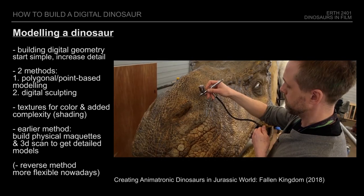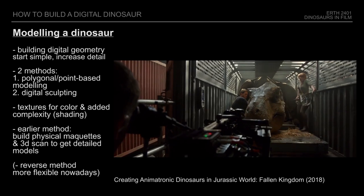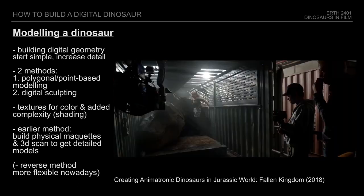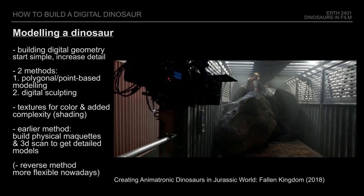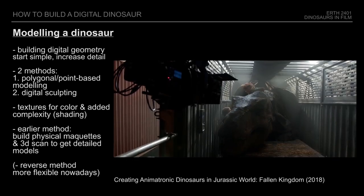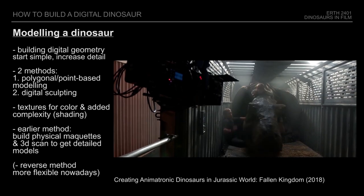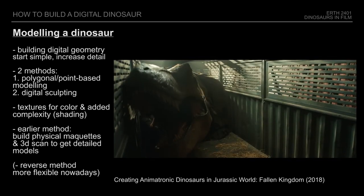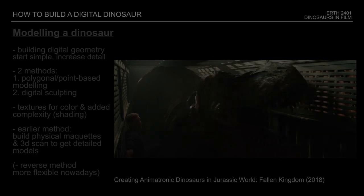For instance, on Jurassic World, the digital model of the T-Rex created by the visual effects team was sent to the creature department which would build the animatronics, so the T-Rex puppet on set would accurately match the digital version.